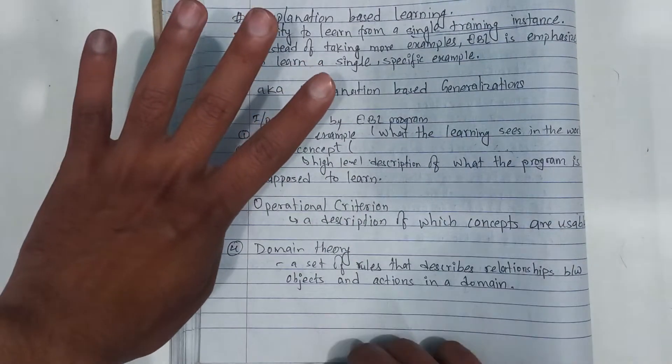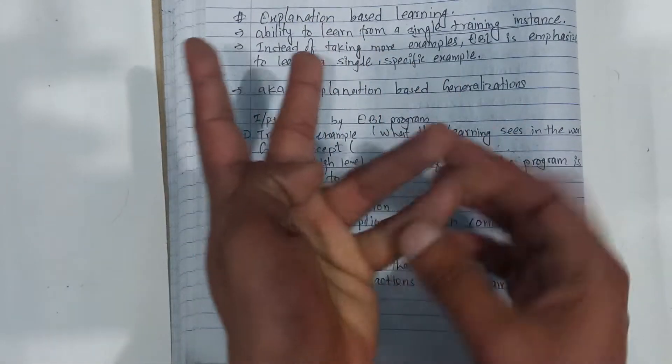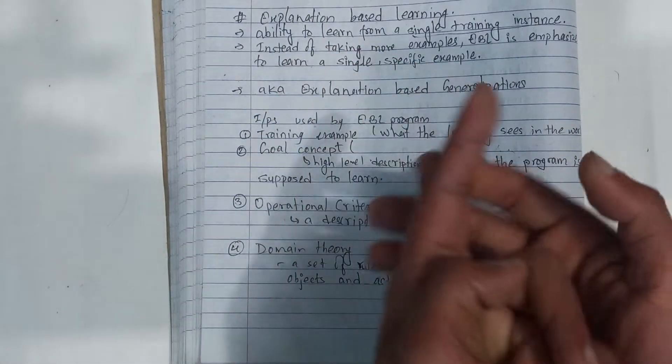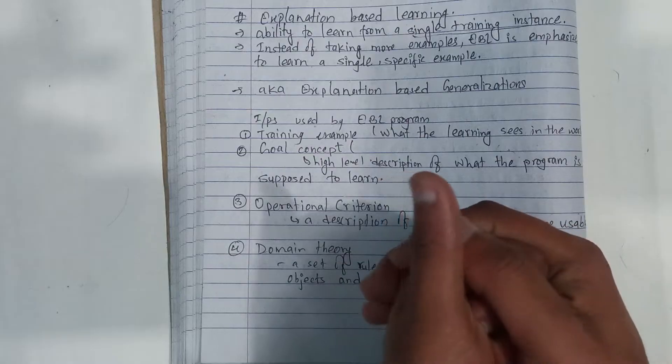There are four inputs. There are training examples, goal concepts, operational criteria, domain theory, and these are the basis.